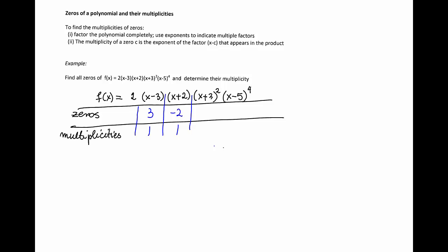Next factor is x plus 3 squared. This factor gives me zero negative 3, and its multiplicity is 2 because the exponent of that factor is 2.